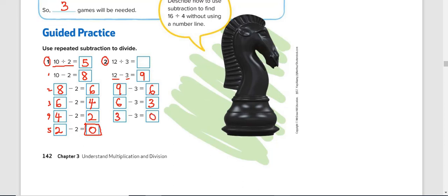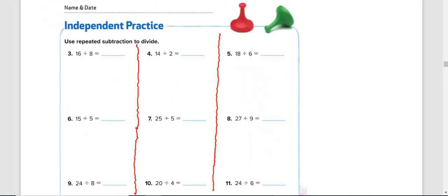So how many times? 1, 2, 3, 4. So our answer is 4. 12 divided by 3 is going to give you 4. Now I want you to pause the video and try your hand at this independent practice. After, play it back to check if you're correct. If you're not correct, check where the mistake is. Okay?